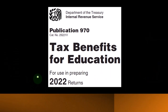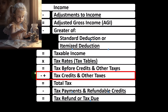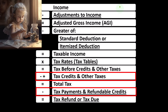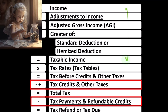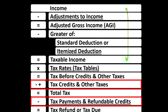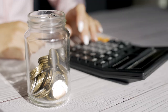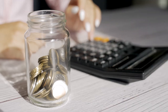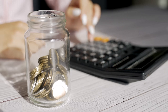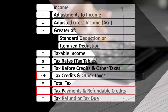Looking at the income tax formula, we're down at the bottom where the credits are located. Remember, the first half of the income tax formula is in essence an income statement, although a strange one ending at taxable income — similar to net income, the bottom line of an income statement. Then we calculate the tax on the taxable income, not with one rate, not with a flat tax, but with a progressive tax system to get to the tax before credits and other taxes.